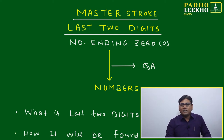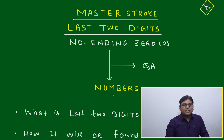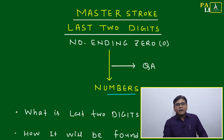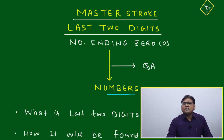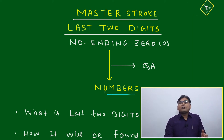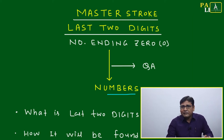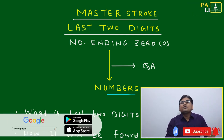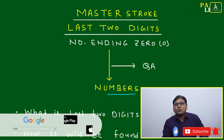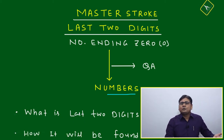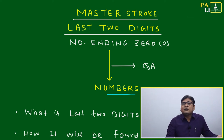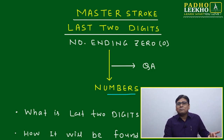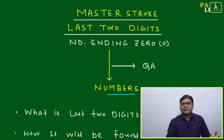This Master Stroke session is related to QA — Quantitative Ability — and especially the number chapter. The number chapter is very important. From the last few years, direct questions on numbers are coming down, but the importance of number concepts is not coming down. It is useful not only for number questions but also for algebra, geometry, DI, LR, and for solving brain teasers and puzzles.